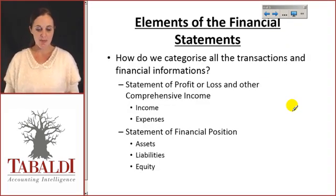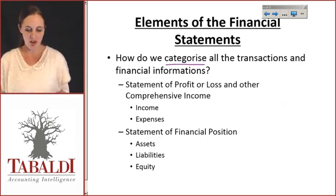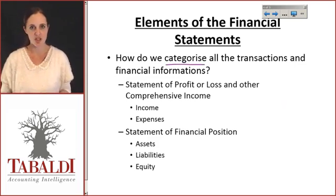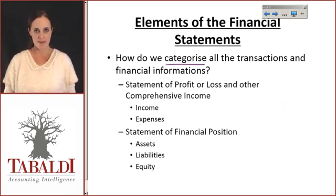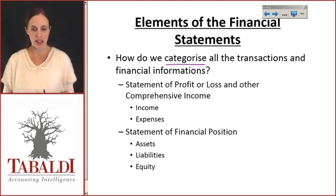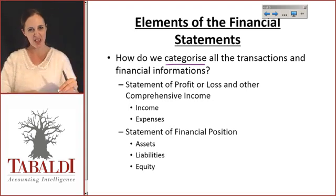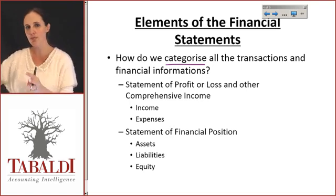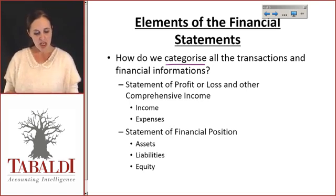So the elements of the financial statements — basically what we're saying is, how do we categorize all the transactions and the financial information that's taken place? There's so much stuff going on. How do we categorize each of them and put them into specific headings, so we're not mentioning things twice or putting things in different categories?